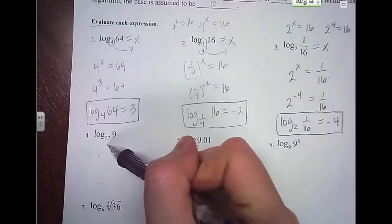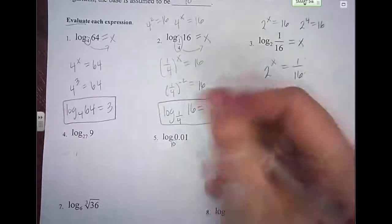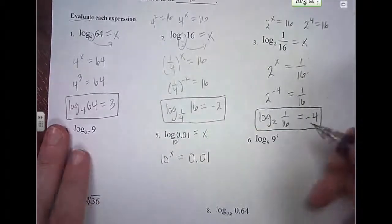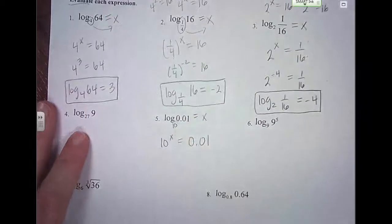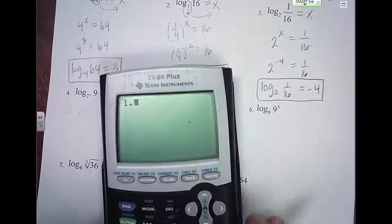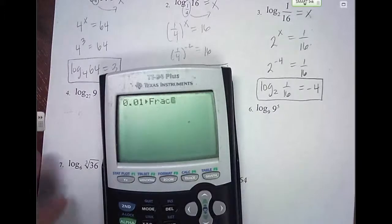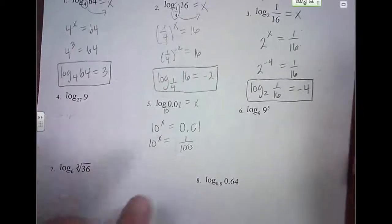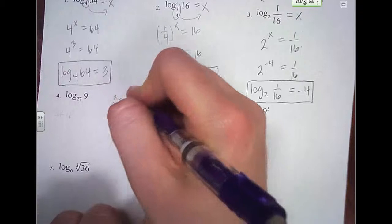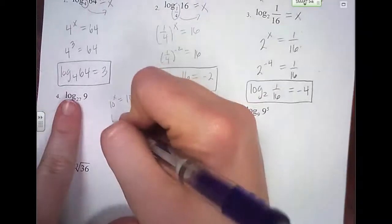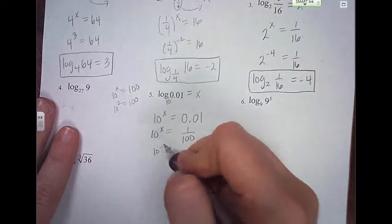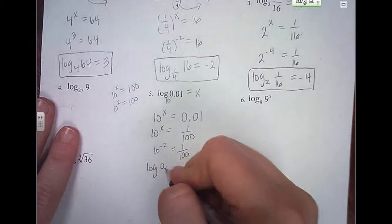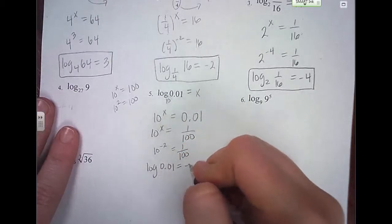We're going to skip number 4 for now. Number 5 is a common logarithm, so we look at 10 to what power equals 0.01. I'd recommend changing this to a fraction — in your calculator, put 0.01, press math, enter, enter, and it gives you 1 over 100. So 10 to what power equals 1 over 100? There's that fraction again. If 10 squared is 100, then 10 to the negative second is 1 over 100. So log of 0.01 equals negative 2.